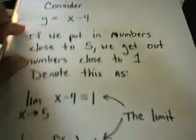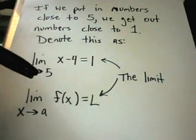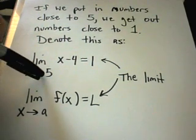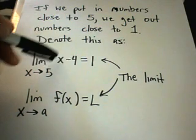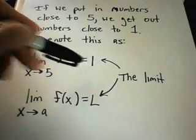The notation for this is we write, in this case, we write the limit as x approaches 5. I'm taking x coordinates close to 5. And if I plug them into the formula, I get numbers close to 1.